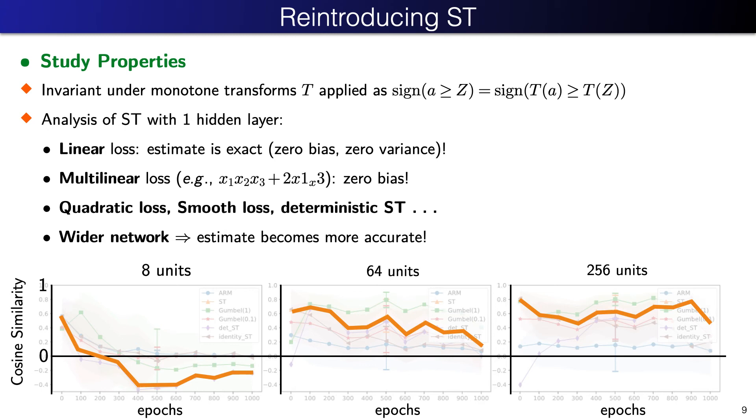We study the properties of this straight-through estimator. Besides basic properties, such as zero bias for multilinear objectives, we show that the estimate is more accurate for smooth loss functions in terms of the Lipschitz constant and gradient strength. This is confirmed in the experiment on the left-most plot. In the beginning of the training, gradients are strong and the measured similarity with true gradient is higher. While towards the end of the training, where the gradients are weak, straight-through may fail to give an ascent direction in expectation, resulting in a failure to optimize.